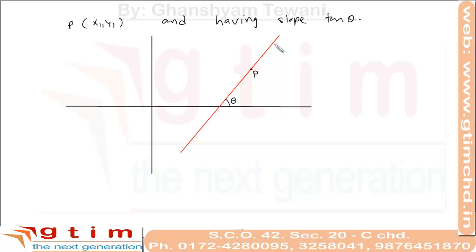Suppose we want to find points on this line at distance r from point P. How many points will there be? There will be two points on the line at distance r from P — one point will be above and one will be below. We want to find two such points on this line at distance r from P. Let's find the coordinates of these points.